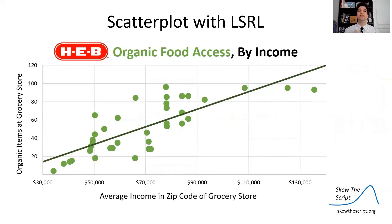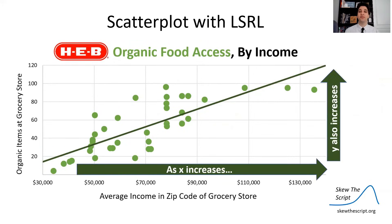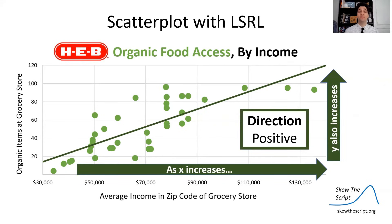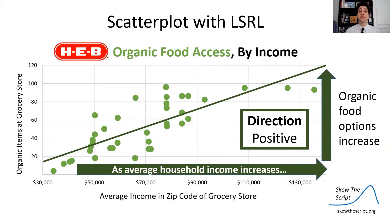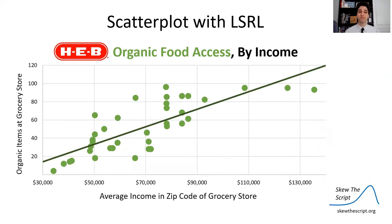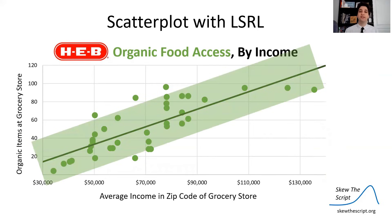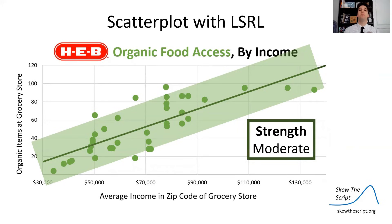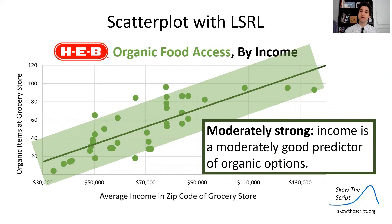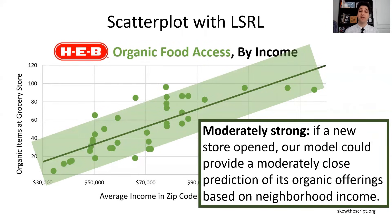Let's put a linear model to Linda's data. With the least squares regression line, we notice as X increases, Y also increases — so in context, as average household income in the areas of these HEBs increases, the number of organic food products offered also increases. It's a positive correlation. There's some spread around the line, so I'd call this a moderately strong correlation — income is a moderately good predictor of organic options offered. If a new store were to open, our model could provide a moderately close prediction based on neighborhood income.